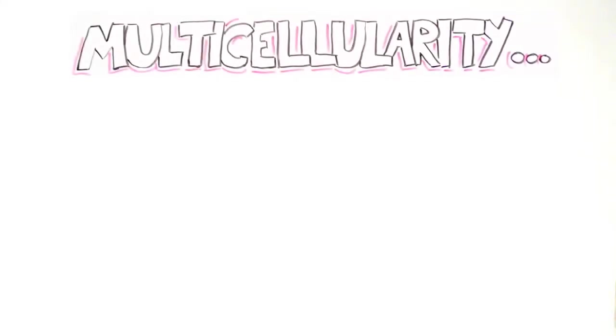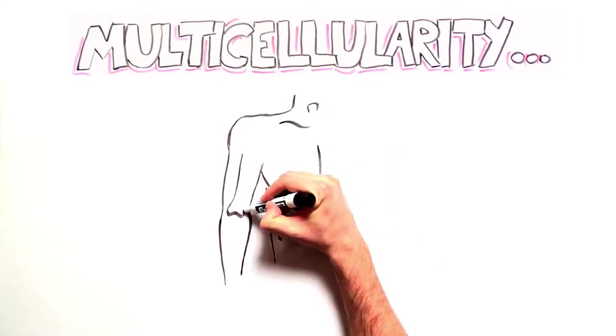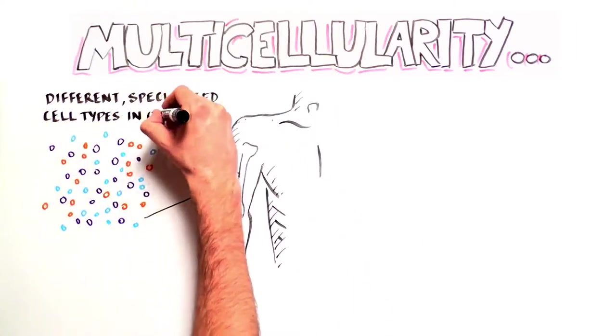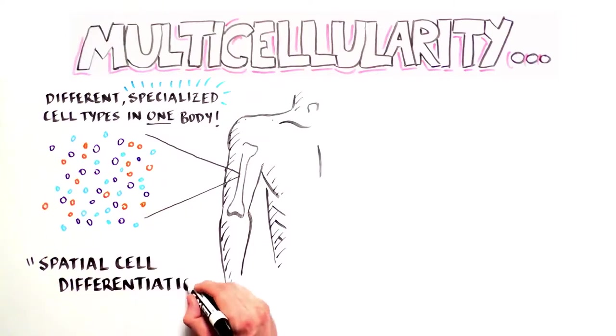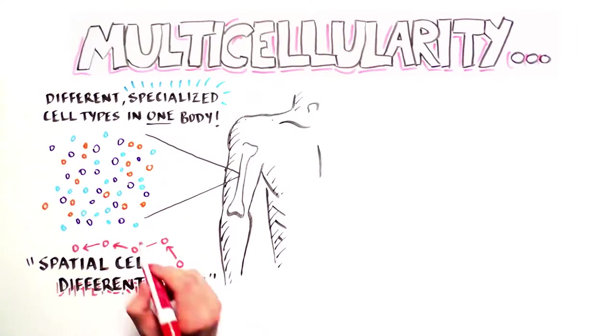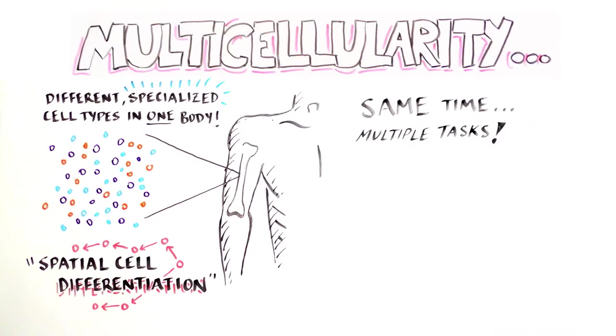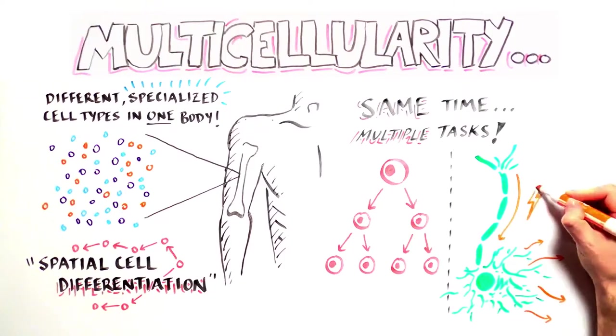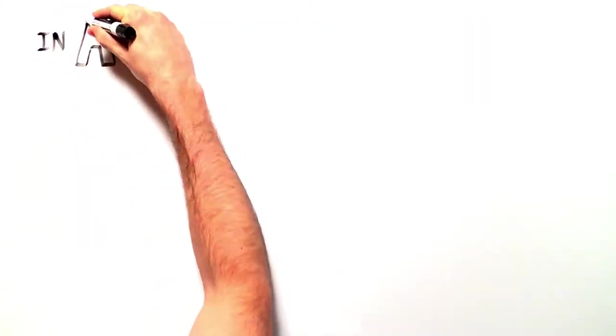A hallmark of multicellularity is the capacity to have different specialized cell types within the same body, which is called spatial cell differentiation. This division of labor allows the organism to perform different tasks at the same time, something that only multicellular organisms can do.